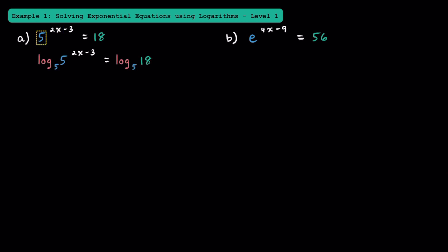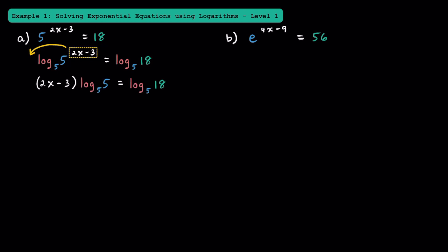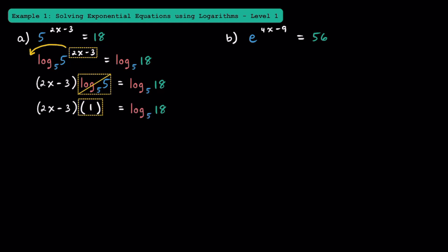When solving exponential equations, it's really important to note what the base is. Since this base is 5, we're going to take log base 5 of both sides. Now that we have a logarithm, remember that you can take an exponent and bring it down in front to multiply by the logarithm. Bringing this 2x minus 3 down in front, we can write the quantity of 2x minus 3 times log base 5 of 5. We specifically took log base 5 of both sides because this cancels out to make 1. Since log base 5 of 5 is just equal to 1, on the left side we can just write 2x minus 3.